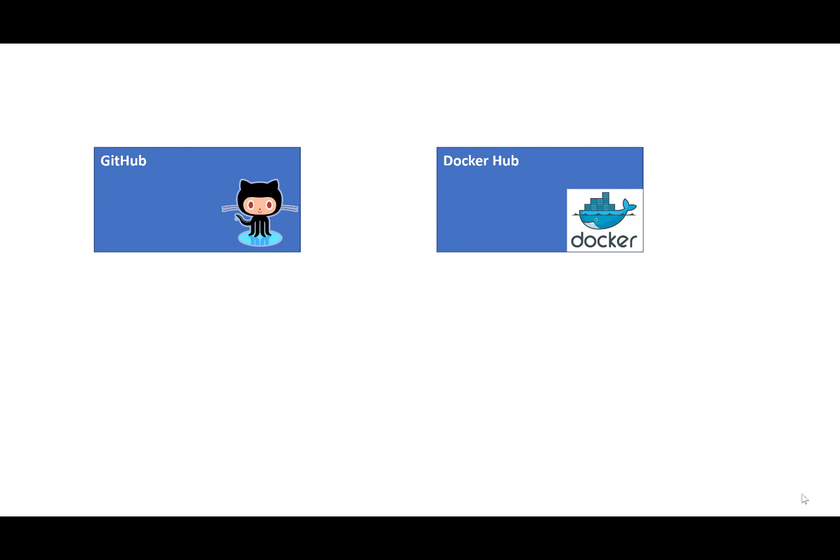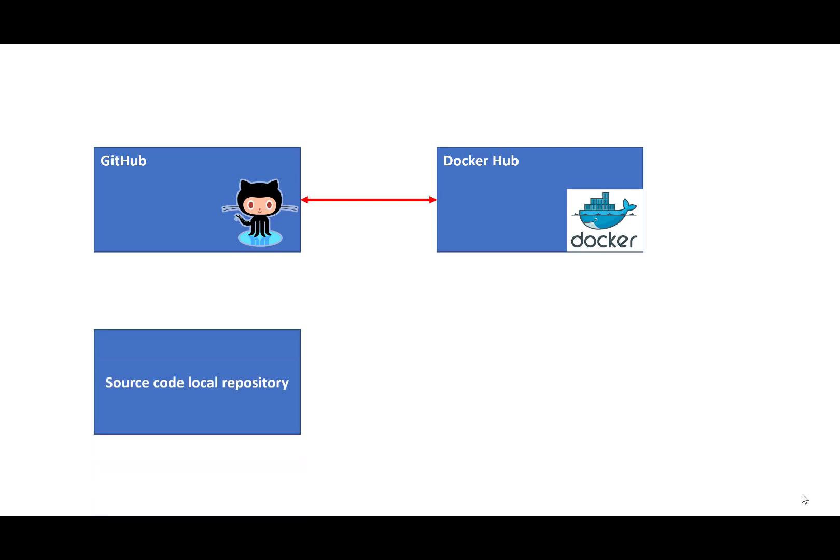We start with an account in GitHub and also an account in Docker Hub. GitHub is where all your source files are going to reside, and Docker Hub is where you're going to create your Docker image — that's where all your Docker images are going to reside. We are going to create a linkage between Docker Hub and GitHub so that whenever we do a commit in GitHub, a Docker image gets triggered and gets built in Docker Hub.